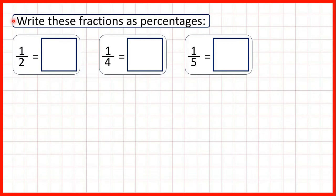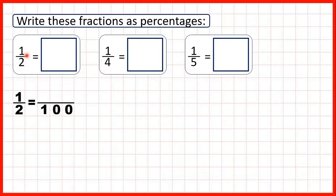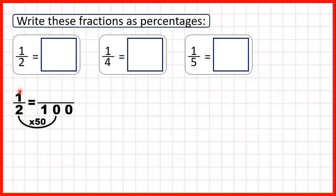We need to write these fractions as percentages. First we have one half. A percentage is a fraction over 100, so we need to find a fraction equivalent to one half which has a denominator of 100. To find equivalent fractions we can use multiplication. Two times 50 is 100, and what we do to the denominator we need to do to the numerator as well, and one times 50 is 50. So because one half is equivalent to 50 hundredths, one half is 50 percent.